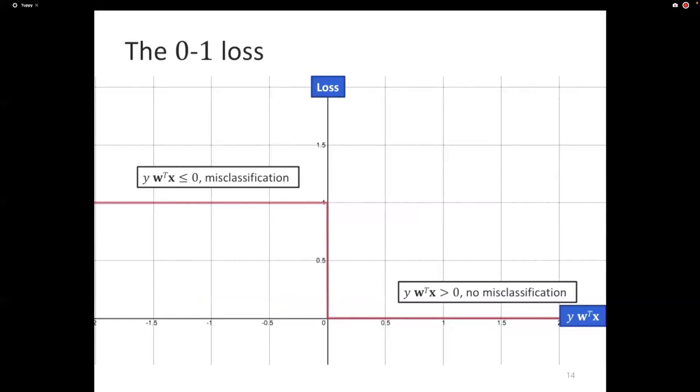As a plot, if I plot this, the horizontal axis here is yw transpose x. The vertical axis is the value of the loss. The 0-1 loss is simply saying, on this side, we have correct, on this side, we have error. And if we have an error, then the 0-1 loss takes the value of 1. If there's no error, the 0-1 loss takes the value of 0. So it's convenient to plot this as a function of yw transpose x.